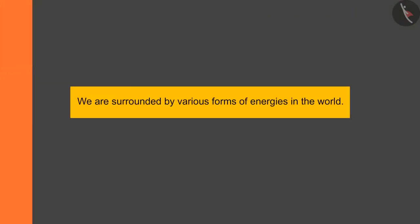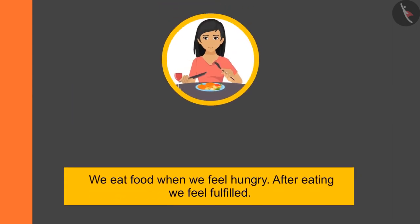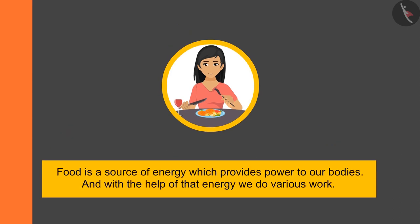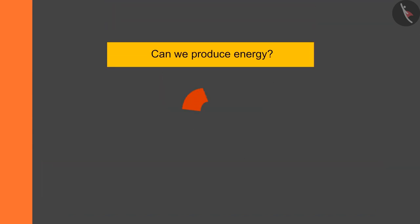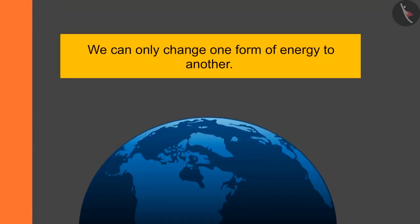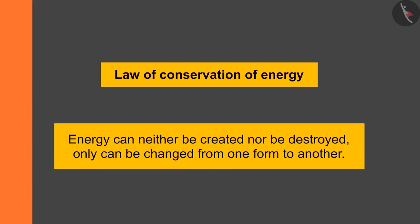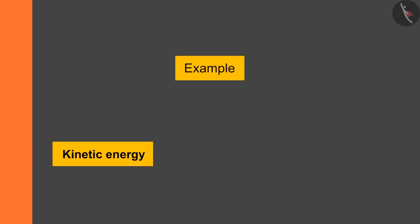We are surrounded by various forms of energy in the world. We eat food when we feel hungry; after eating, we feel fulfilled. This food helps us in doing different work like studying, playing, and walking. Food is a source of energy which provides power to our bodies. We cannot produce energy — we can only change one form of energy to another. According to the law of conservation of energy, energy can neither be created nor destroyed; it can only be changed from one form to another.